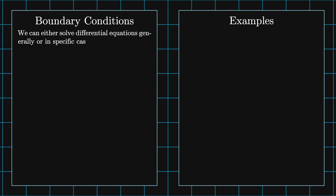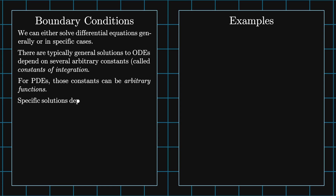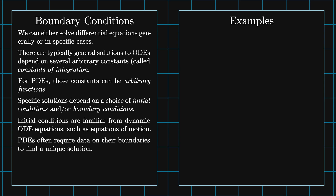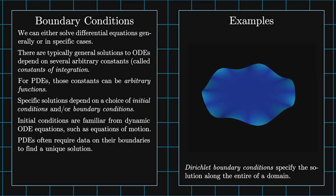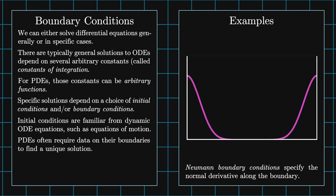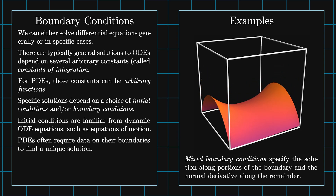We can either solve differential equations generally or in specific cases. General solutions to ODEs typically depend on several arbitrary constants called constants of integration. For PDEs, those constants can be arbitrary functions. Specific solutions depend on a choice of initial conditions and/or boundary conditions. Initial conditions are familiar from dynamic ODE equations such as equations of motion. PDEs often require data on their boundaries to find a unique solution. Dirichlet boundary conditions specify the solution along the entirety of a domain. Neumann boundary conditions specify the normal derivative along the boundary. Mixed boundary conditions specify the solution along portions of the boundary and the normal derivative along the remainder.